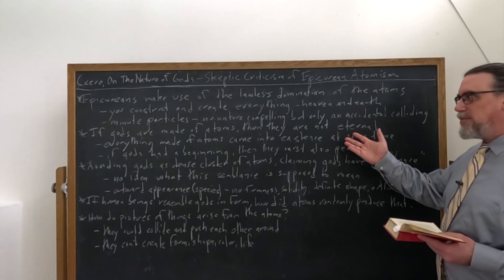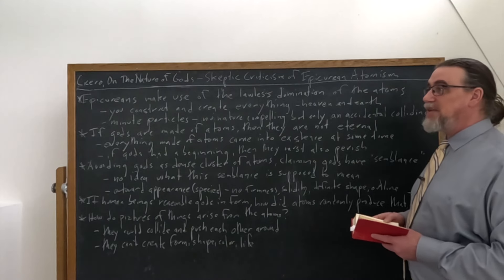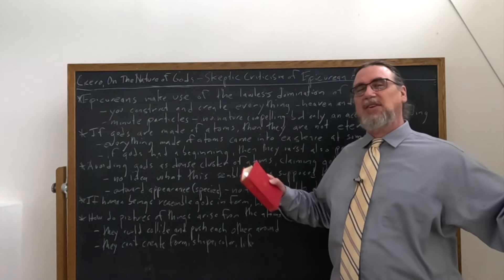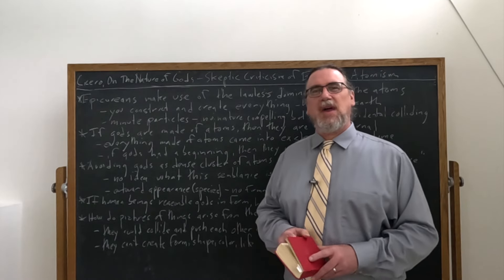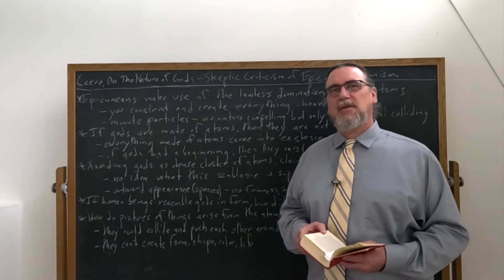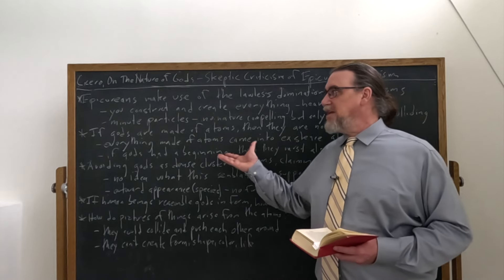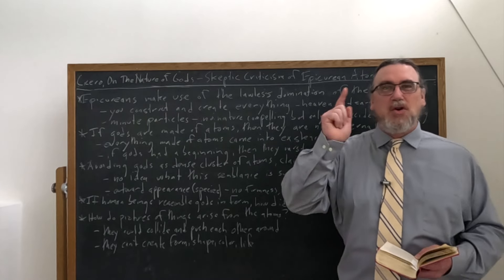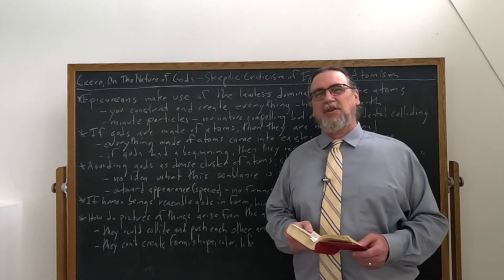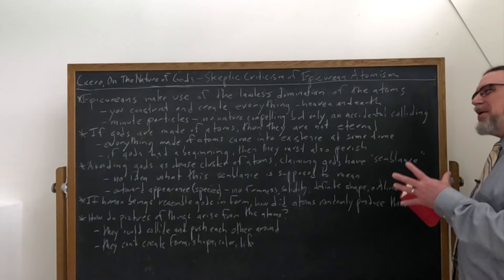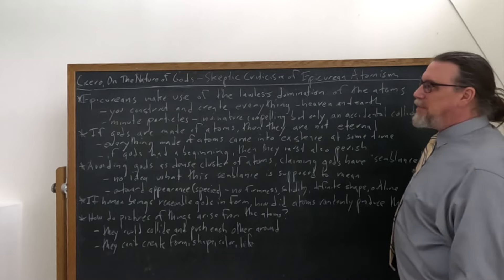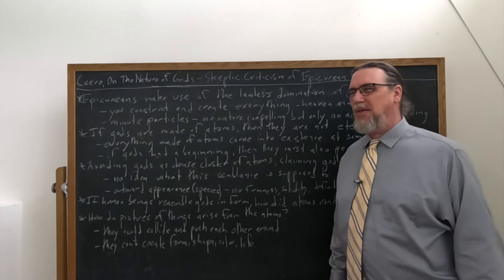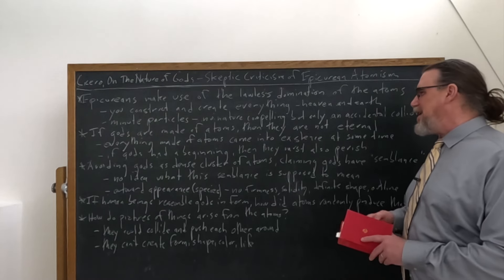If the gods are made out of atoms, then they came into existence at some time. If they came into existence at some time, then they're not eternal. And you might say, once they come into existence, they're in a stable configuration and that remains the case forever. And Coda can say, no, anything that has a beginning is also going to have an end. And you, Valleus, with respect to the Platonist, you actually said this. So you're not going to get eternal gods. And an Epicurean could say, okay, fine, but there's always some gods around, maybe they don't last forever. So it's not that damning.